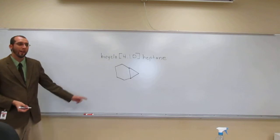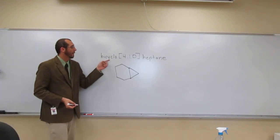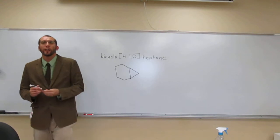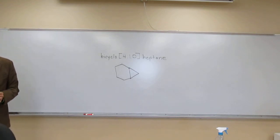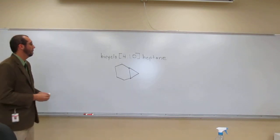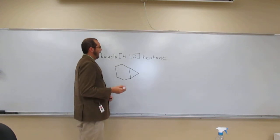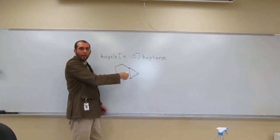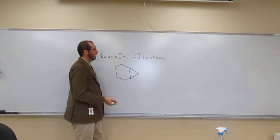So that's the compound right there. This is bicyclo[4.1.0]heptane. Okay, so let's prove that to ourselves. Just go backwards and figure it out, right? So bicyclo, yes, there's the rings that have the two bridgehead carbons.